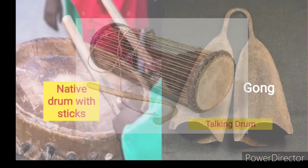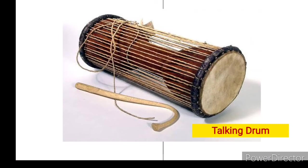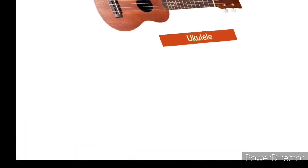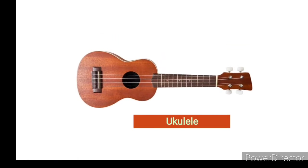Next we have the talking drum. The talking drum produces different sounds — you can see the strings all around it, and those strings help the talking drum give you the different sounds you want. I'll hold the strings so you can hear the different sounds it produces. That's the talking drum. Next up is the ukulele.